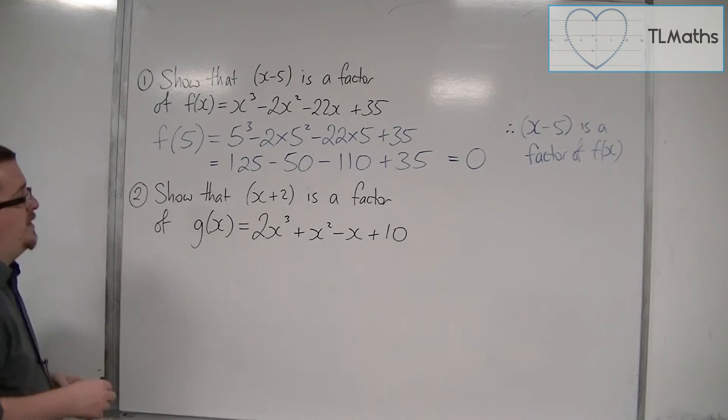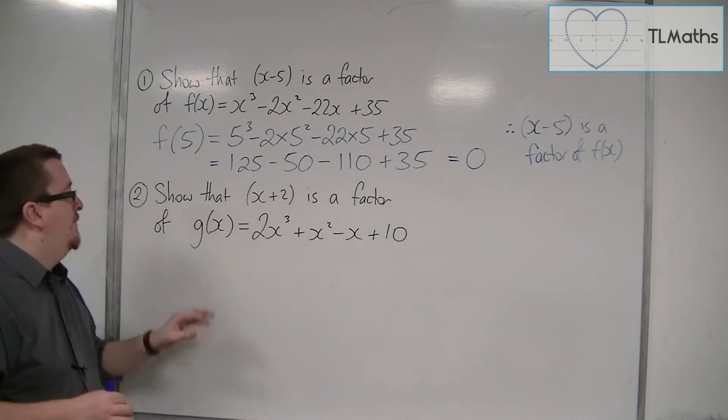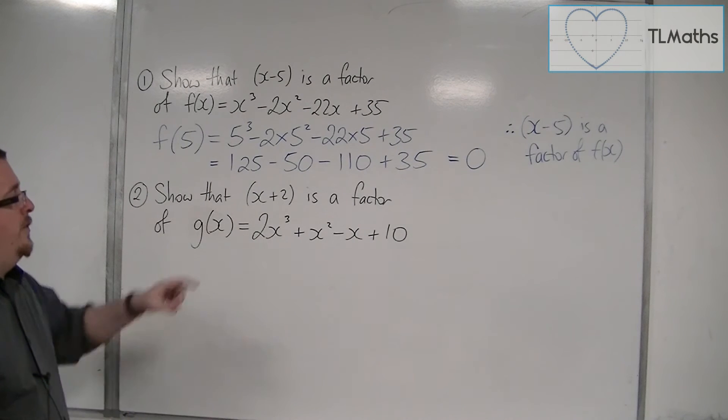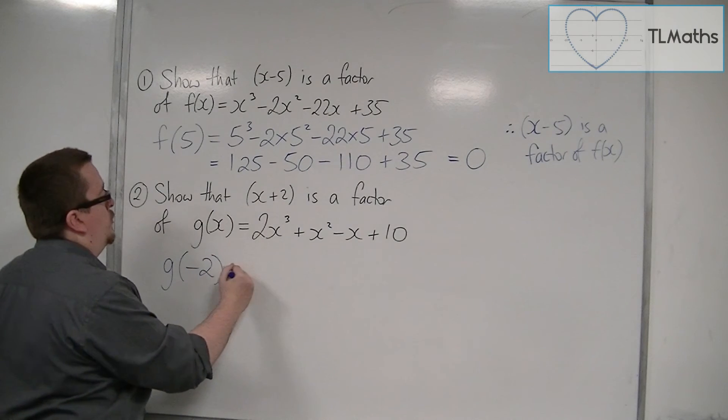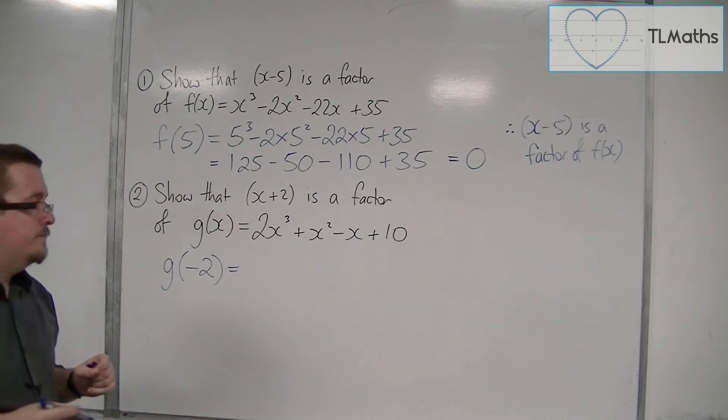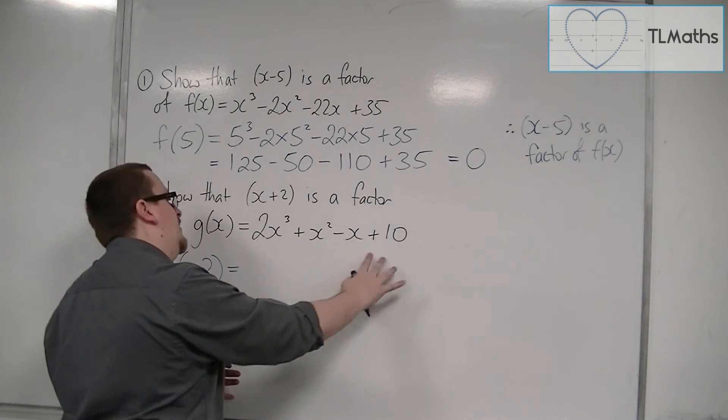So let's have a look at the second one. Show that x plus 2 is a factor of g(x). So if x plus 2 is a factor, then g(-2) should be equal to 0.